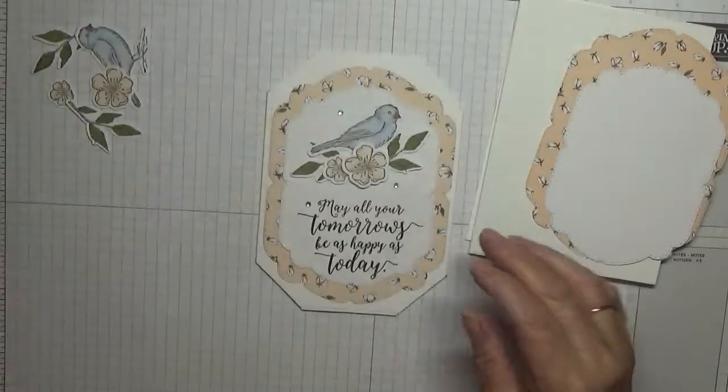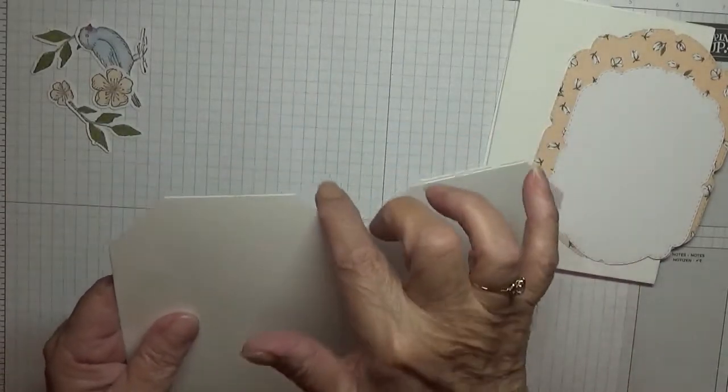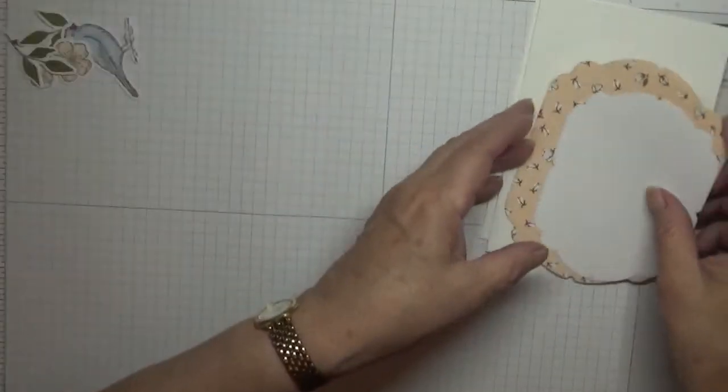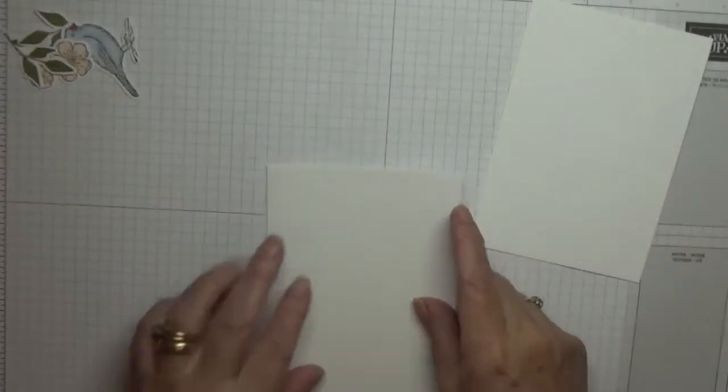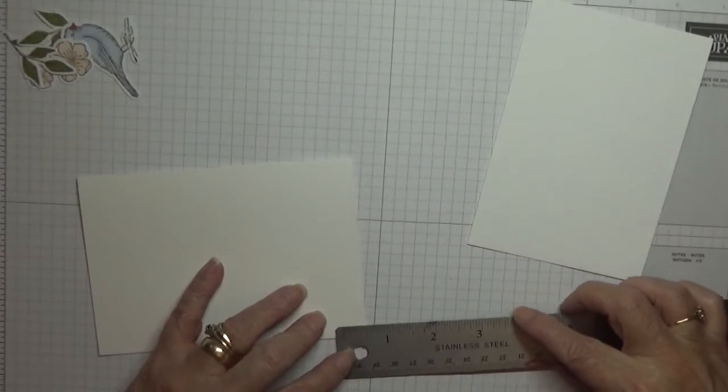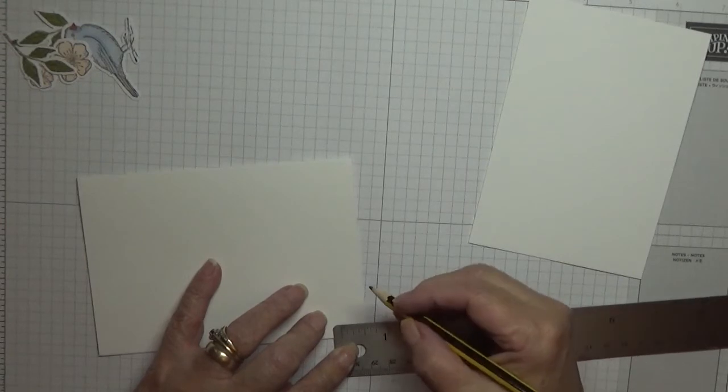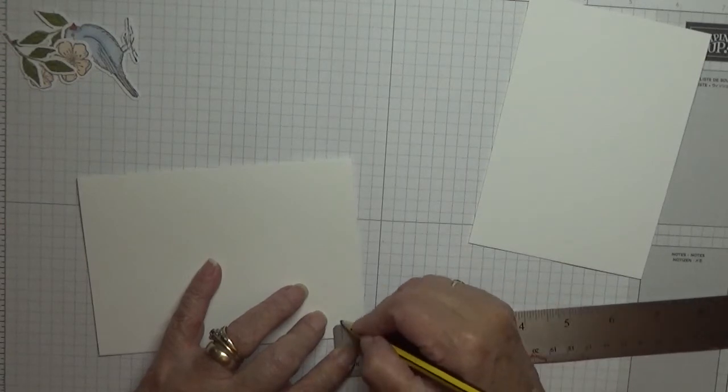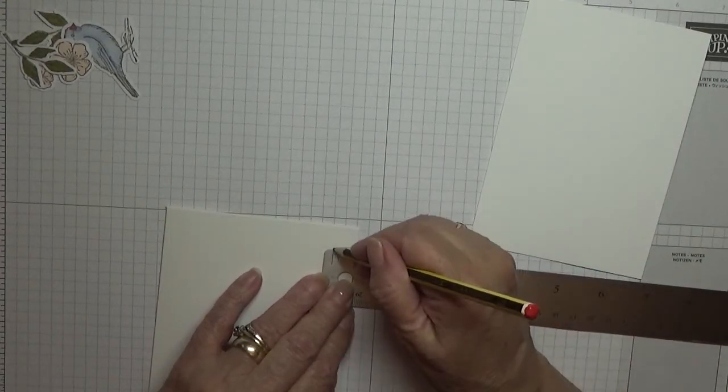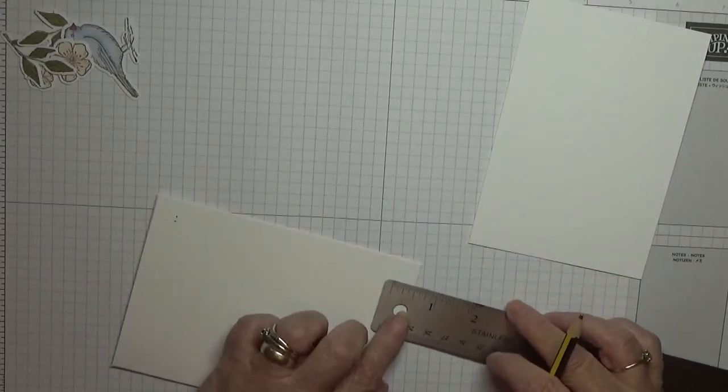First of all, we need to prepare. Now this one has got its corners cut off as you can see. So we need to prepare the cardstock first. To do that, I am going to measure each corner half an inch down and half an inch in, and I'm going to do that on all four corners.